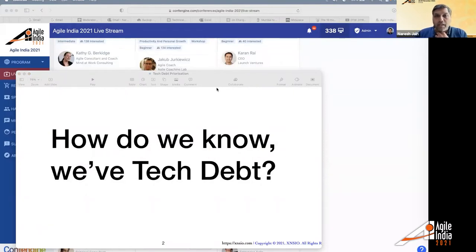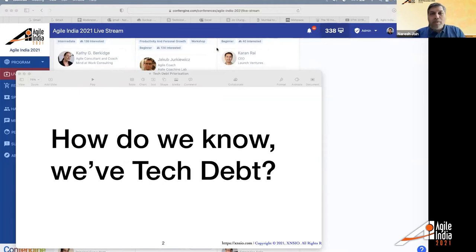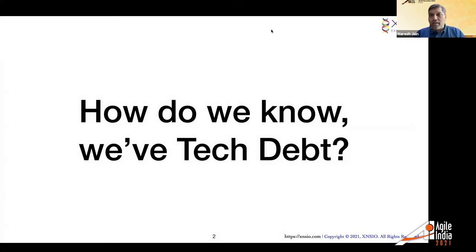Looking at the chat — outdated versions of software, leaking issues, lots of bugs, manual testing needed, taking shortcuts, fraud issues, outdated versions of third-party software, vulnerability-related issues. Developers keep asking to rewrite code, missing clean code, low productivity. Fantastic — those are absolutely some good indicators that we have tech debt.